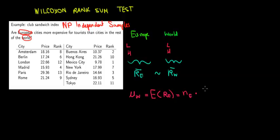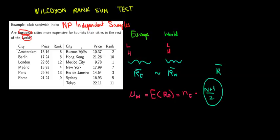The overall average rank is (n + 1) / 2. We have ranks from 1 to 13, so 13 is the highest, and the average rank we would expect under a symmetrical distribution is (13 + 1) / 2 = 14 / 2 = 7. So 7 is our expected average rank.